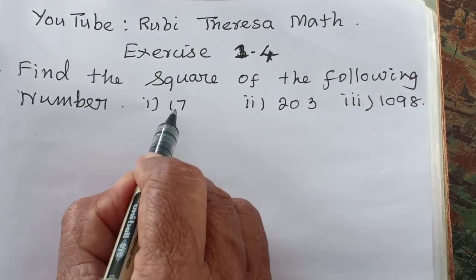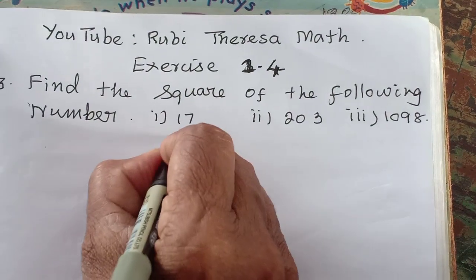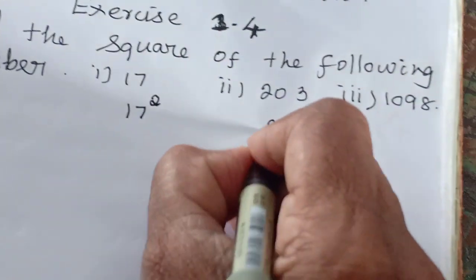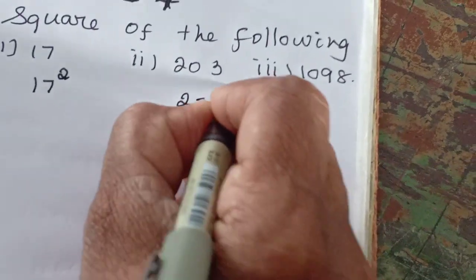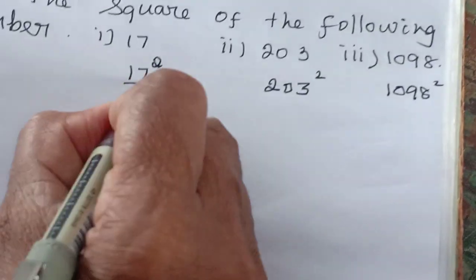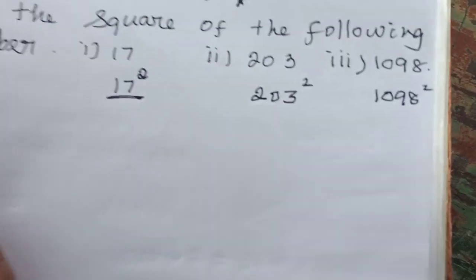Square means how many times it should be multiplied? Two times. That is, you got to find out 17 square, 203 square, 1098 square. 17 square means how many times you got to multiply? Two times.